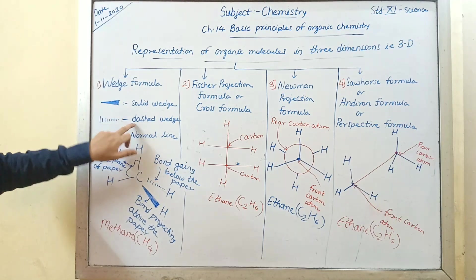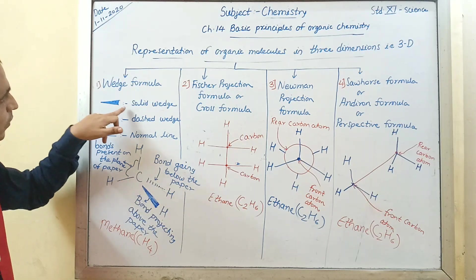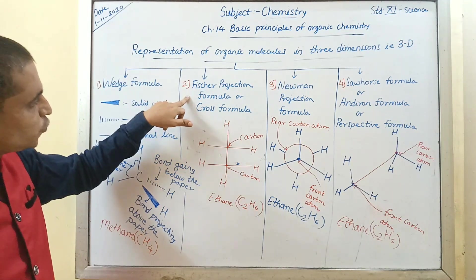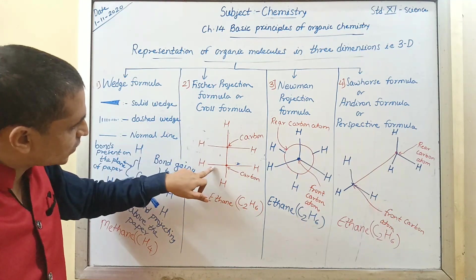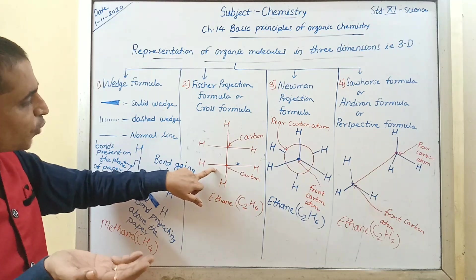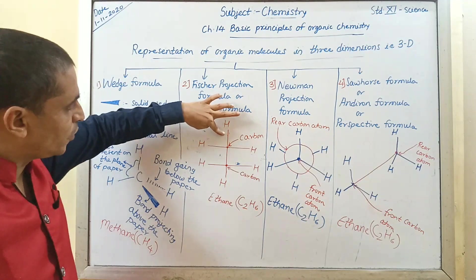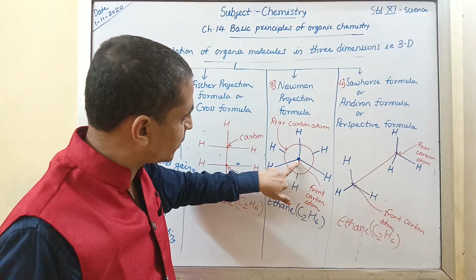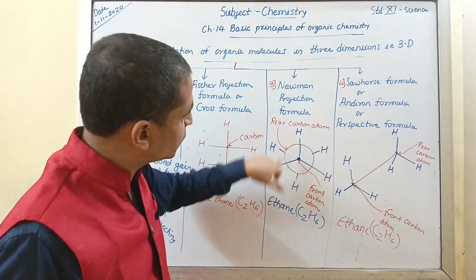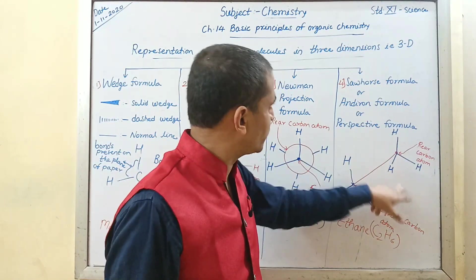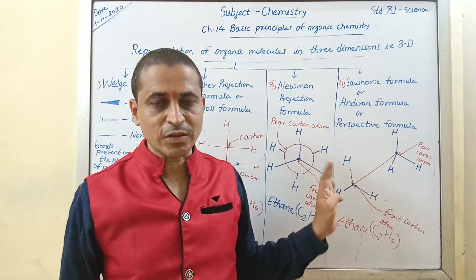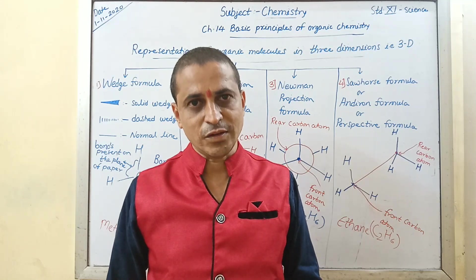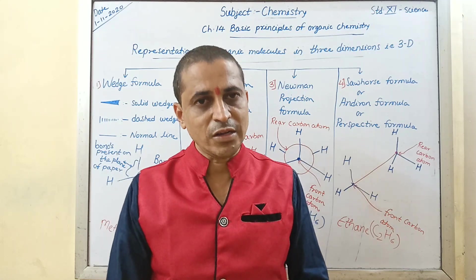In wedge formula, remember solid wedge, dash wedge and normal line — try to remember the importance of all these symbols. In Fischer projection formula, always remember horizontal lines represent bonds projecting out toward the viewer from the carbon, and vertical lines represent bonds projecting away below the carbon. In Newman projection formula, the center represents the front carbon and the circle represents the rear carbon. In sawhorse formula it looks like an animal, so it is called sawhorse formula. I hope you understood all these four methods to represent 3D structures. Thank you very much. In the next lecture we will study classification of organic compounds.